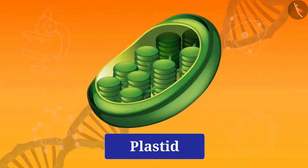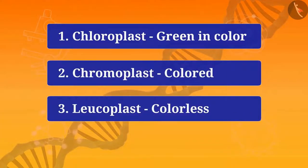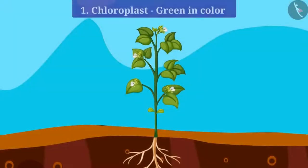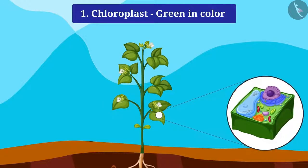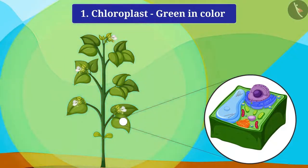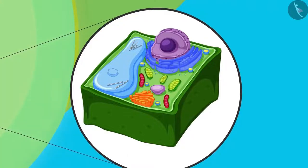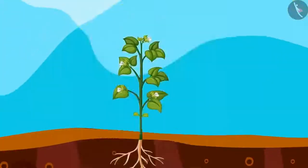Now we will know about plastids, the next cell organelle. Plastids are present only in plant cells. There are three types of plastids: chloroplast, chromoplast, and leucoplast. Chloroplast is green in color, chromoplast is colored, and leucoplast is colorless. Plants are green in color because of chloroplast — it contains a green pigment called chlorophyll, which also helps in photosynthesis. Chloroplast is a double-membrane organelle whose inner structure consists of layers of membranes with a thylakoid located in a fluid called stroma.